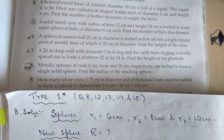Hello everyone, so today we're going to move on to the next set of questions, Type 1B. Type 1 questions - question number 8, 12, 13, 14, and 15. Question number 8 says: Metallic spheres of radii 6 centimeter, 8 centimeter, and 10 centimeter respectively are melted to form a single solid sphere. Find the radius of the resulting sphere.